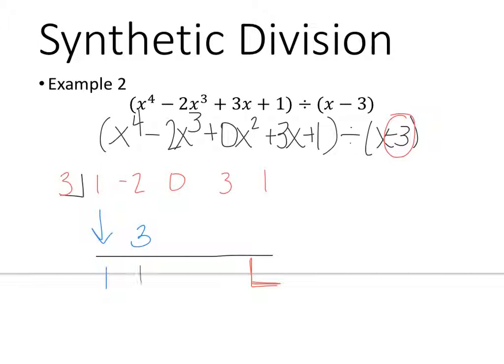Negative 2 plus 3 is 1. So again, 3 times 1 is 3. 0 plus 3 is 3. 3 times 3 is 9. So 3 plus 9 is 12.